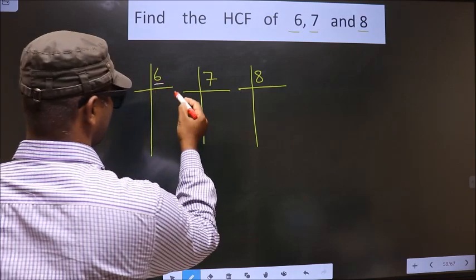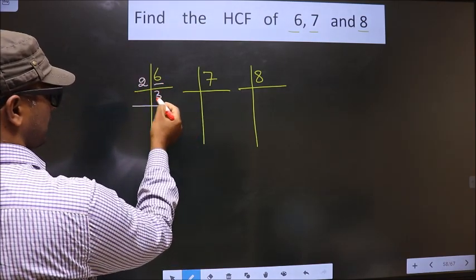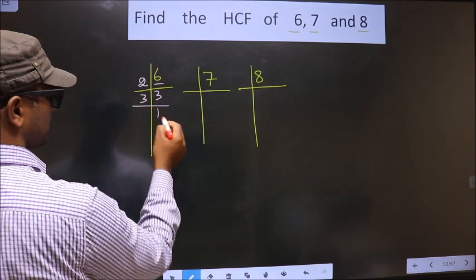Here we have 6. 6 is nothing but 2, 3, 6. Now 3 is a prime number so 3 once 3.